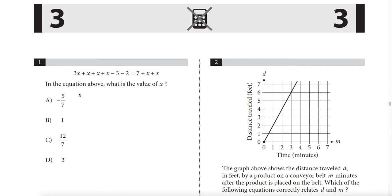Question 1 gives us a bunch of x's. I'm going to cross out two x's, so we'll have 4x = 7. We don't subtract 5 — we add 5 — so 7 plus 5 is 12, meaning x = 3. Answer choice D.